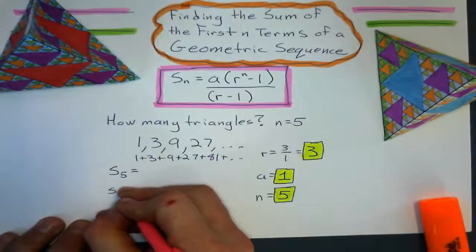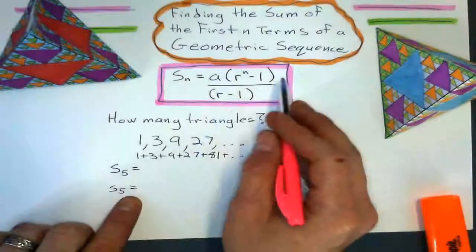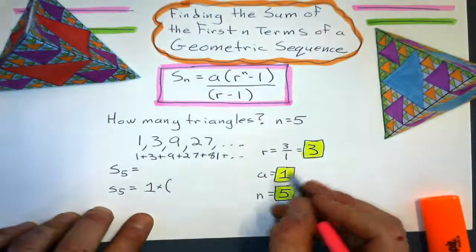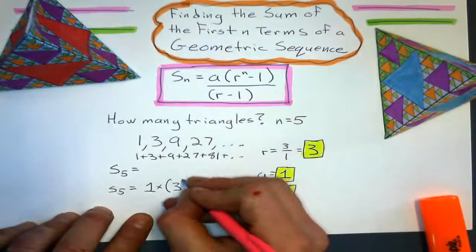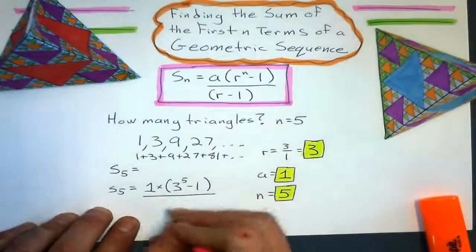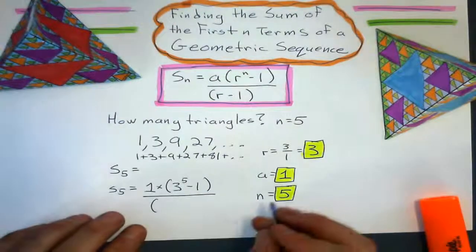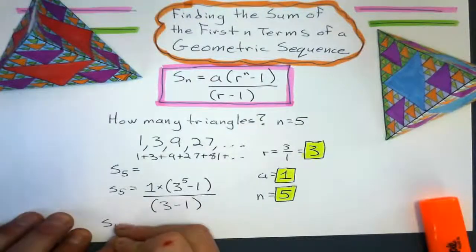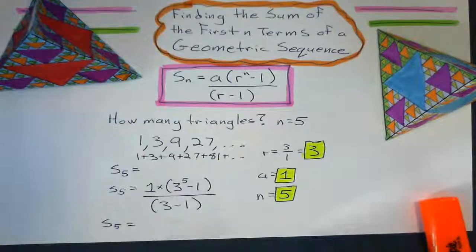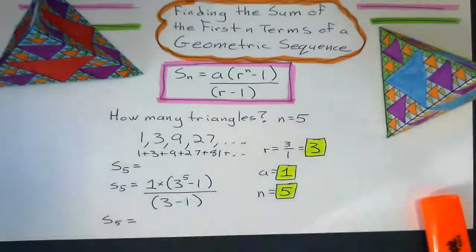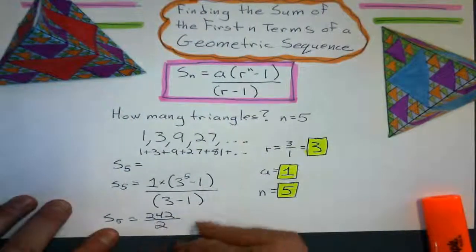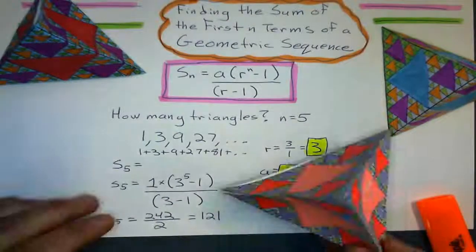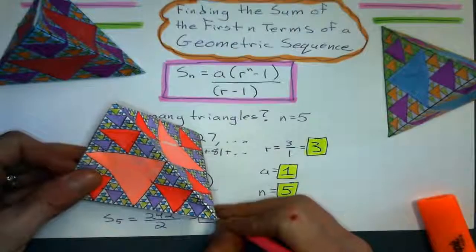To use that formula, the first term is going to be 1, so that's not going to change anything, times the common ratio of 3 to the power of n — which is 5 — take away 1, over the common ratio minus 1. The brackets are important here, especially when you're using a calculator. So the sum of the first 5 terms: the numerator gives me 242, and 3 minus 1 gives me 2. So the sum of the first 5 terms gives me 121 triangles.